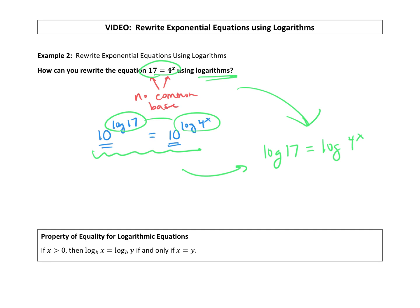That brings us to a property of equality for logarithmic equations. If x is greater than zero, then log base b of x equals log base b of y if and only if x is equal to y.